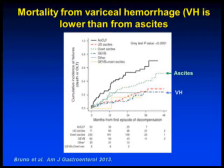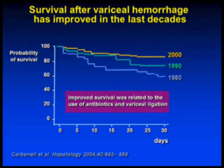Of the complications of cirrhosis, when you compare it to ascites, variceal hemorrhage — and this is a prospective study from Italy — actually showed that the mortality from variceal hemorrhage over time was lower than when the patient has ascites. This is partly because variceal hemorrhage can occur in the patient that's very compensated, as the only decompensating event. Also, mortality from variceal hemorrhage is lower because we have succeeded at improving survival of patients with acute variceal hemorrhage.